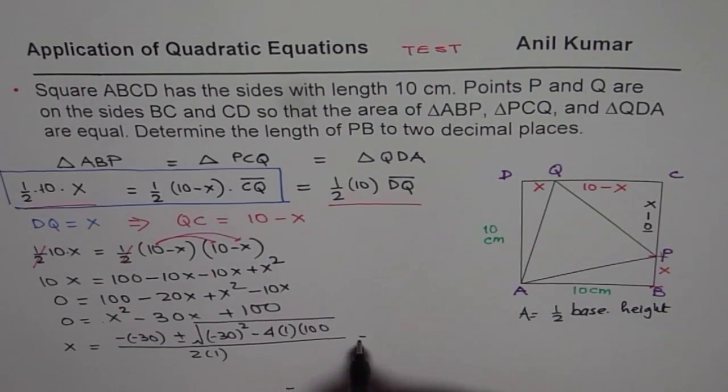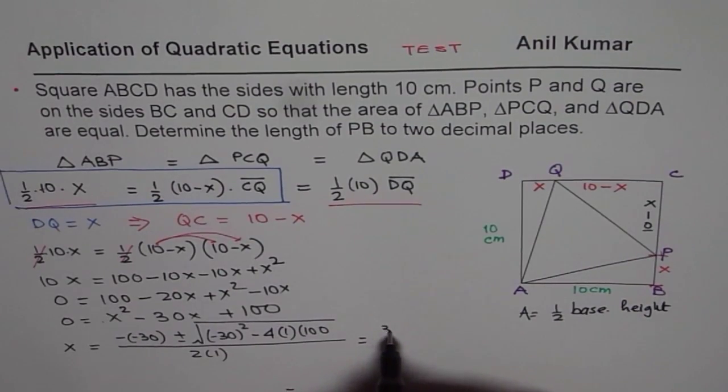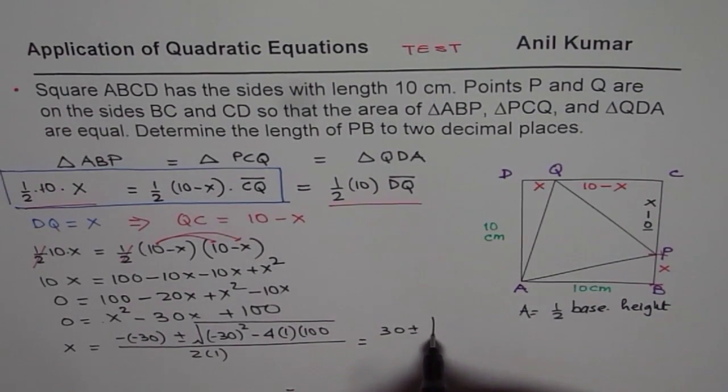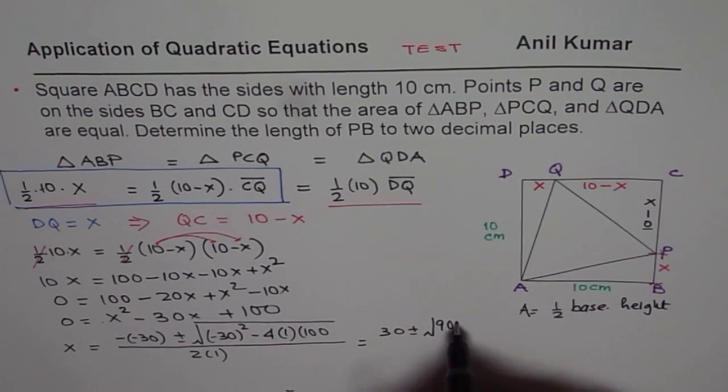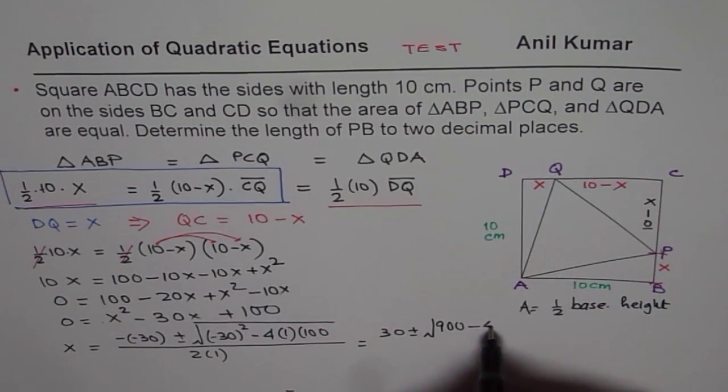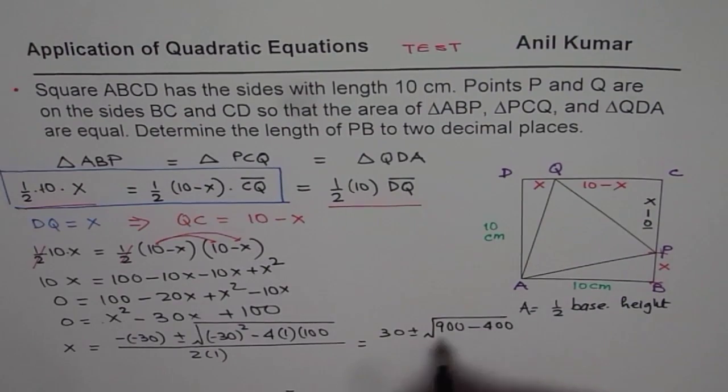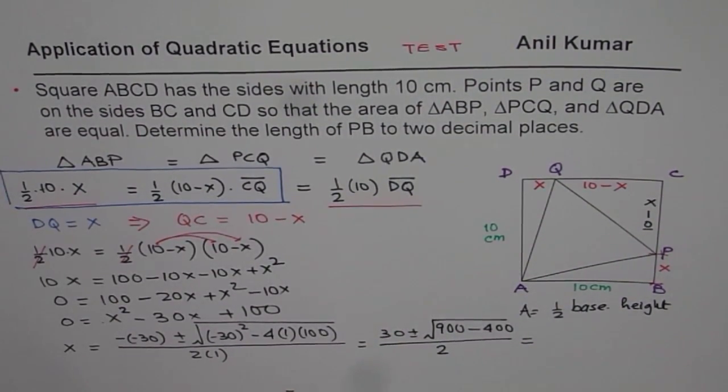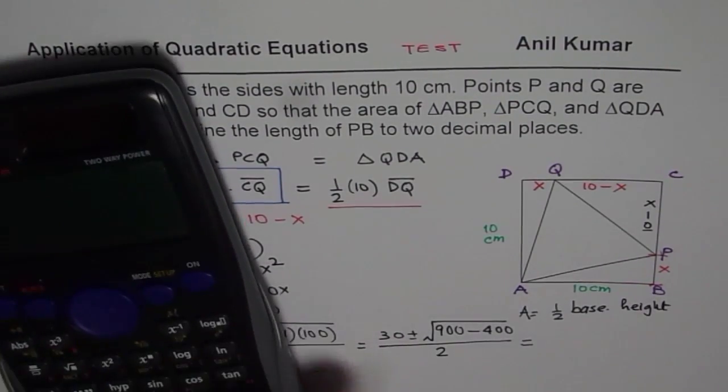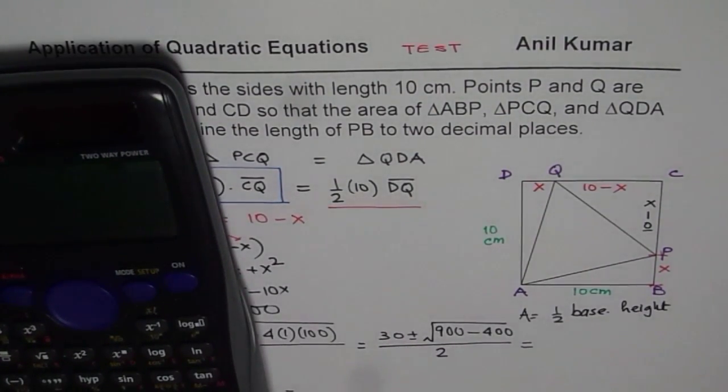So that is what you get. Now, we could write this as equal to 30 plus minus square root of, that is 900 minus 400, divided by 2. And now we can use calculator to find this answer.